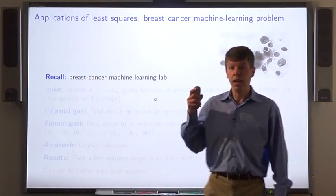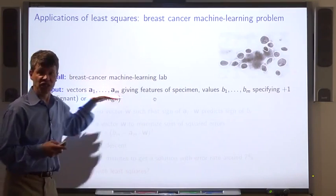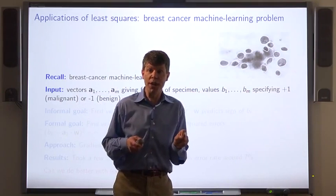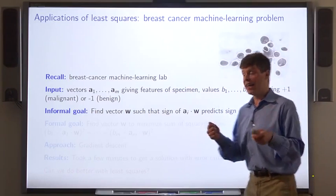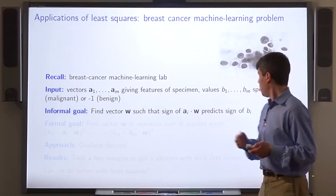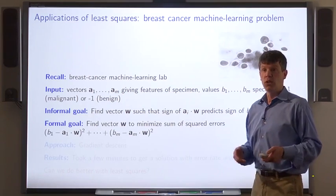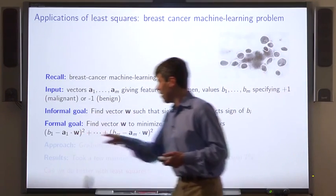Finally, let's recall the breast cancer lab that we did. The problem was this. We had a bunch of vectors specifying features of different specimens and values specifying plus 1 or minus 1 according to whether the specimen was malignant or benign. Informally, the goal was to find a vector w that helps you predict whether a specimen is malignant or benign from the feature vector. And the way it would do that is the sign of the dot product of the i-th feature vector ai with this vector w was supposed to predict the sign of bi, which is whether the specimen is malignant or benign. Formally, our goal was to find the vector w that minimizes this loss function. Minimizes the sum of squares of the errors.